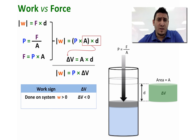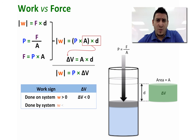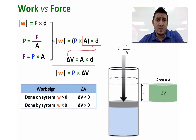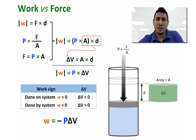Remember, if work is done on the system, work is positive. However, because we applied more pressure on the piston, we decreased the volume of the gas, so delta V is negative. Similarly, if work is done by the system, work is negative and delta V is positive because the gas expands. Since they have opposite signs, we remove the absolute value and write: W equals negative pressure multiplied by delta V.